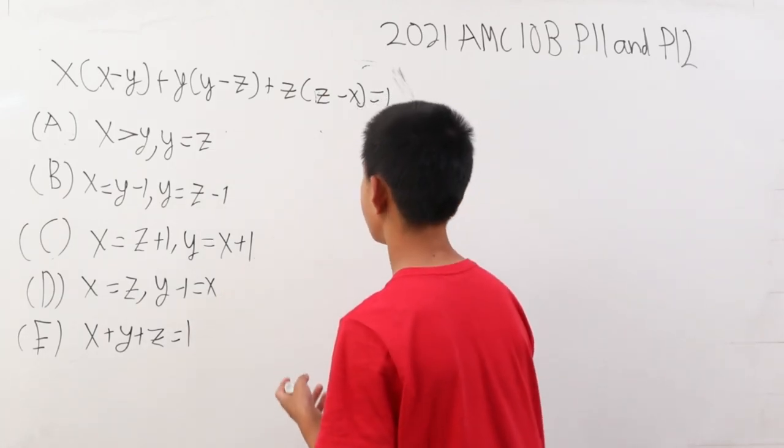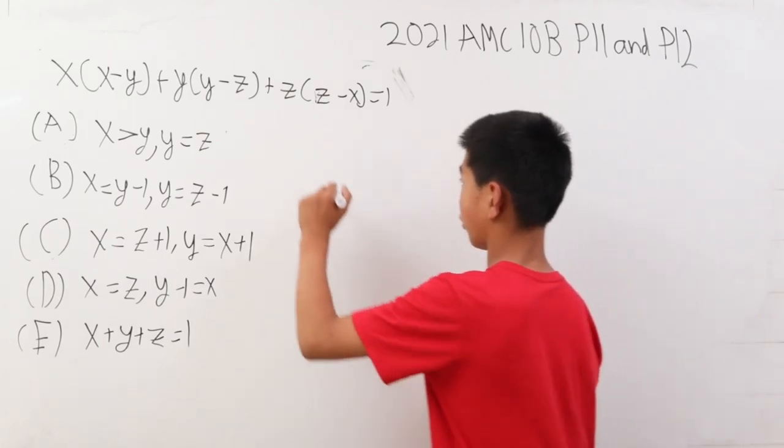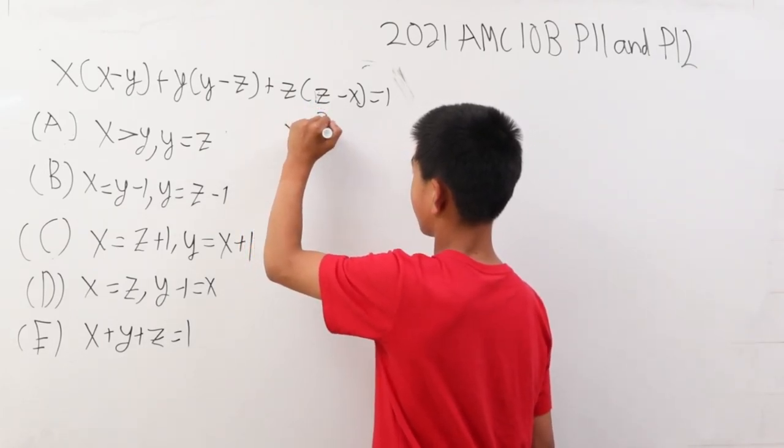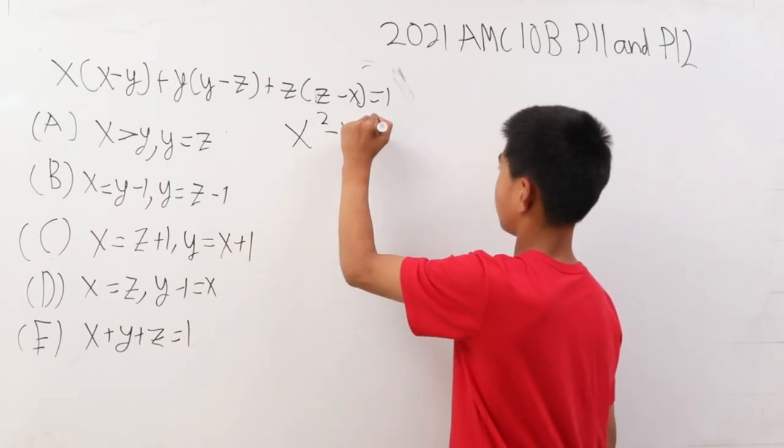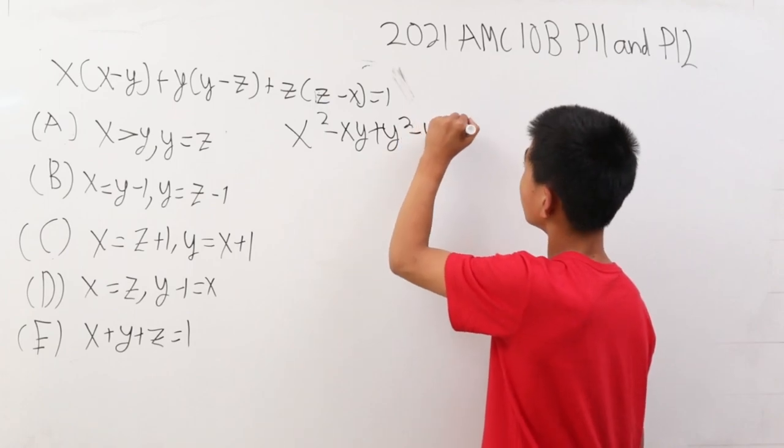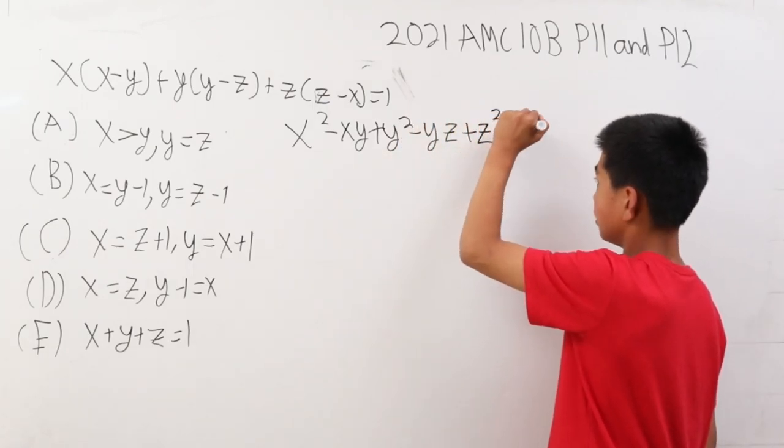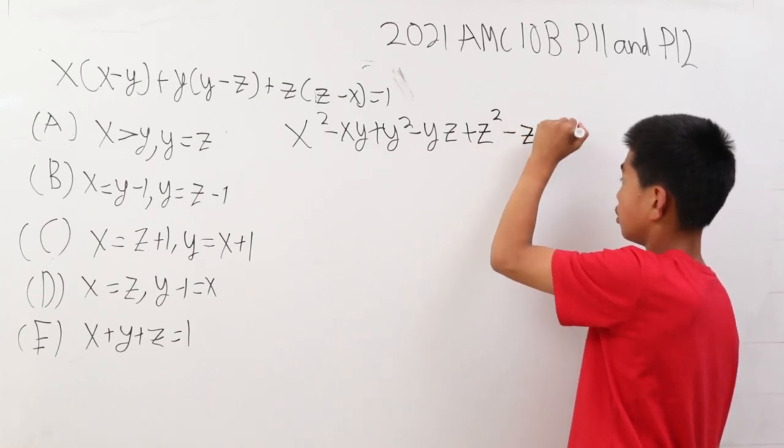This is basically what it's saying. Now the easiest thing to do here is multiply everything out. x squared minus xy plus y squared minus yz plus z squared minus zx equals 1.